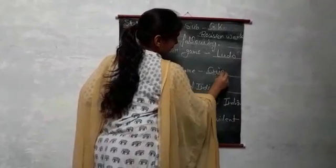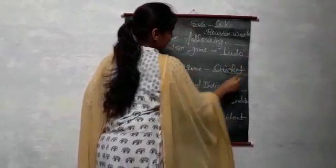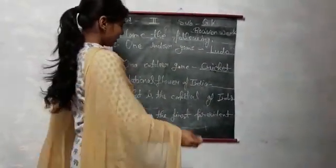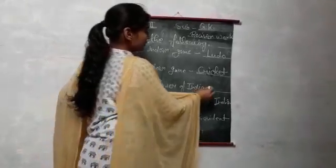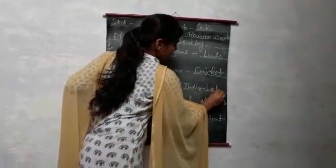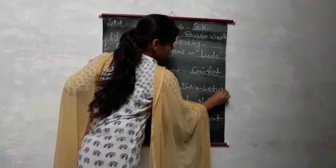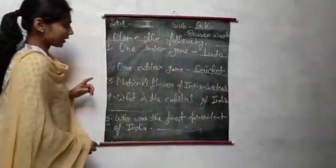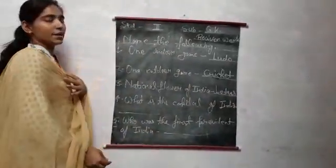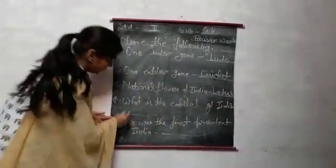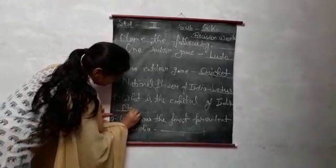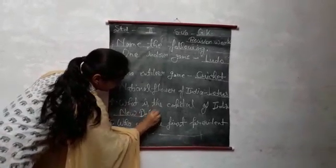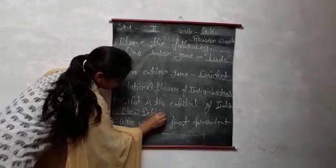Who can you tell me one outdoor game? Okay. One national flower of India. What is the capital of India? New Delhi. N-E-W D-E-L-H-I. New Delhi.